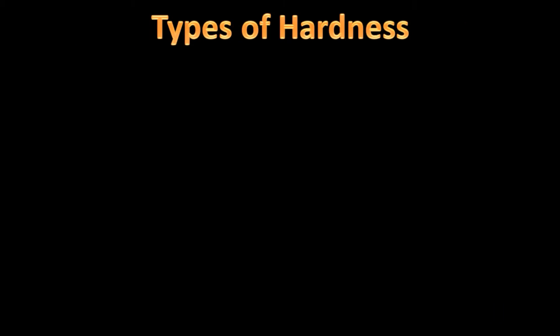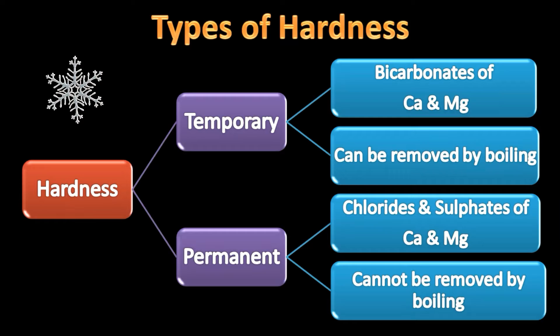We all know that bicarbonates are thermally unstable, which means that on heating, bicarbonates decompose to give carbon dioxide and water. All other salts are not thermally unstable compared to bicarbonates. Hence, we are going to classify hardness into two types: temporary and permanent. Temporary hardness is caused by bicarbonates of calcium and magnesium.